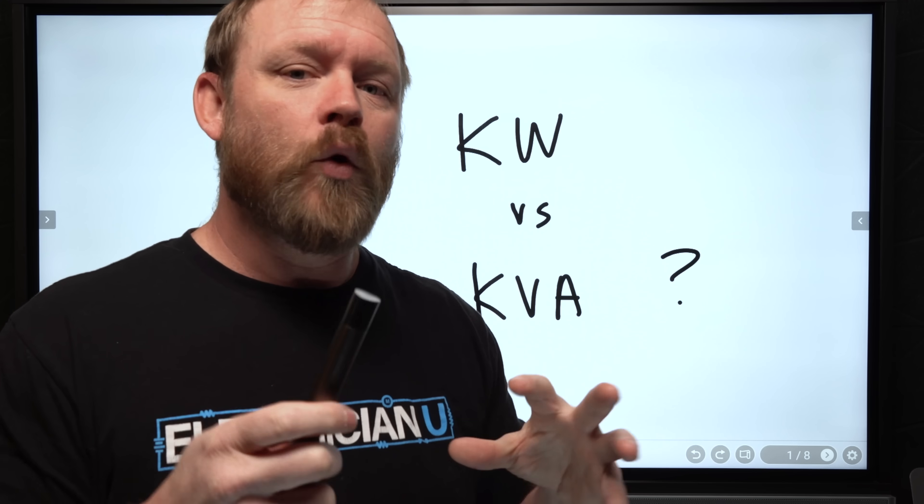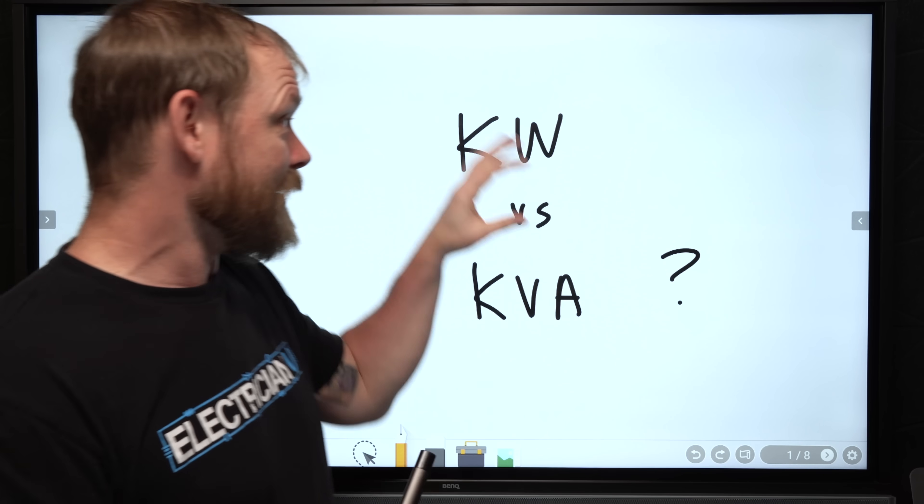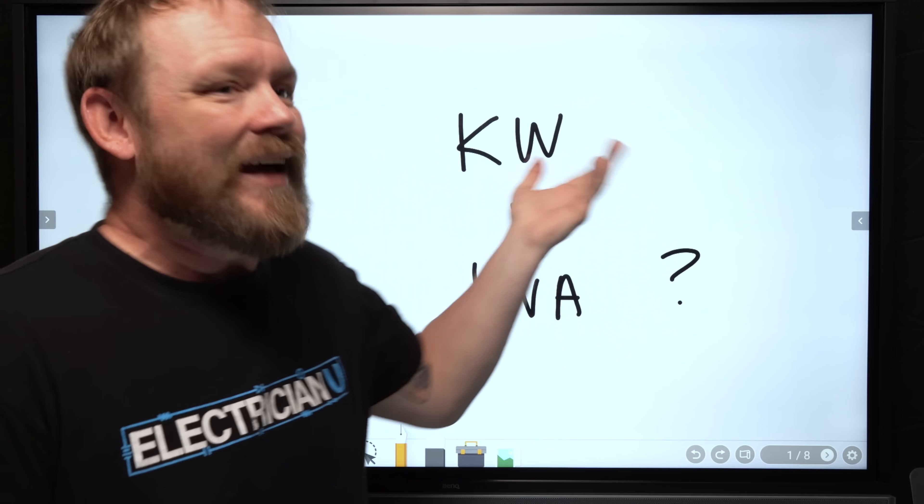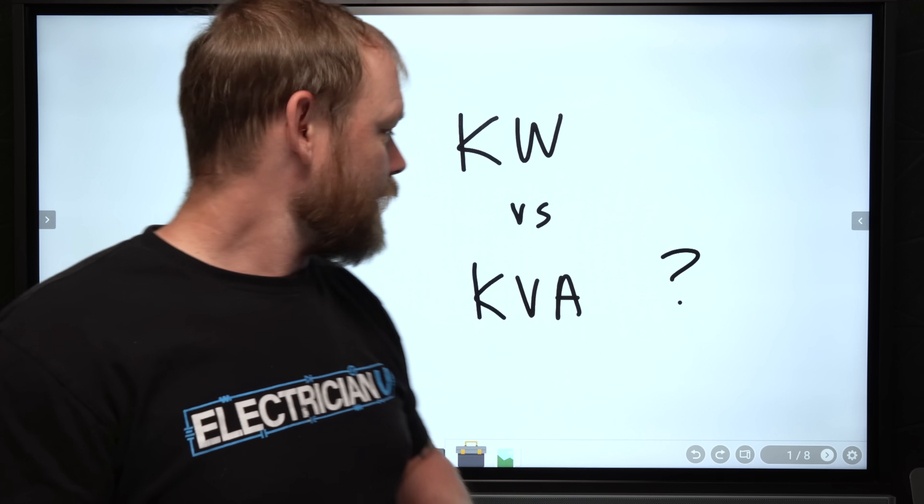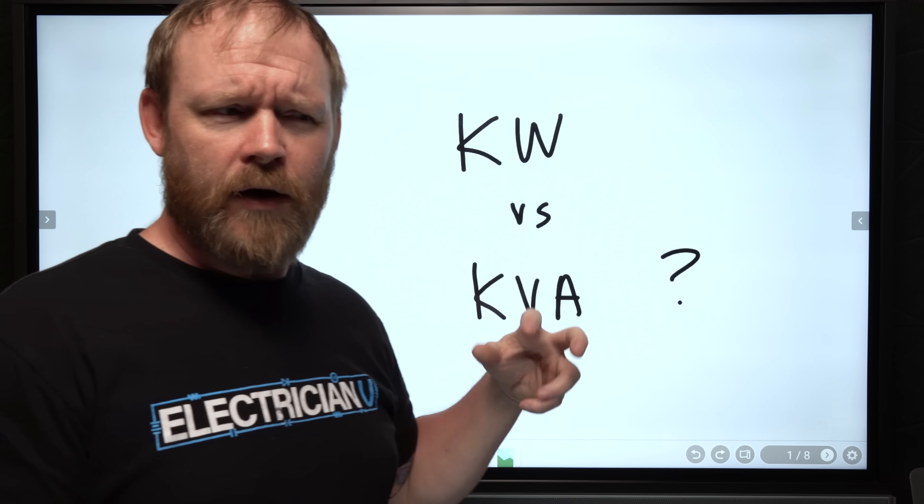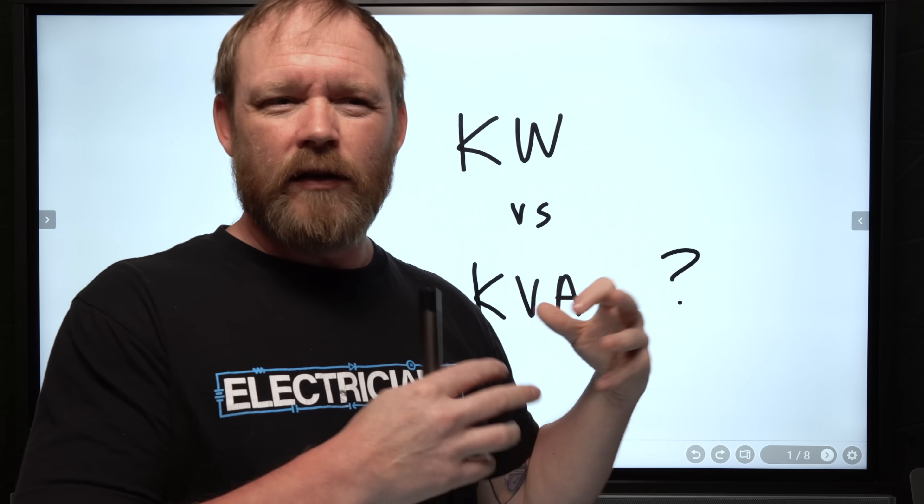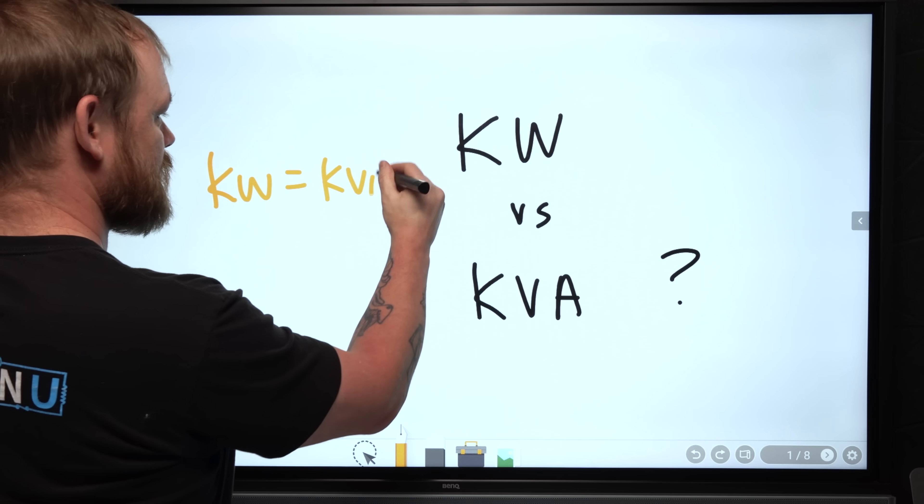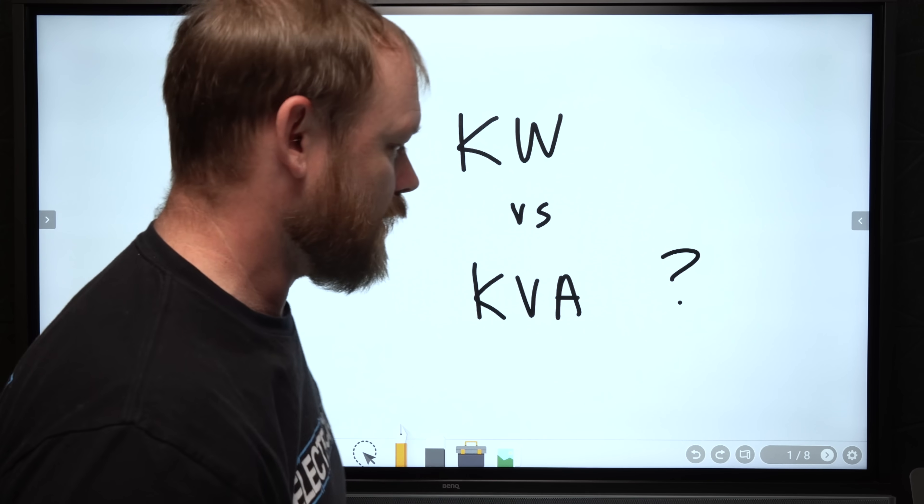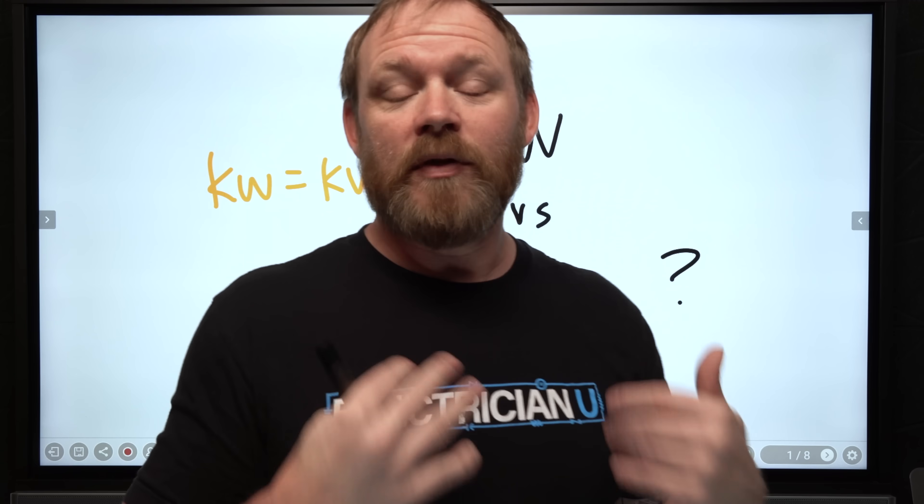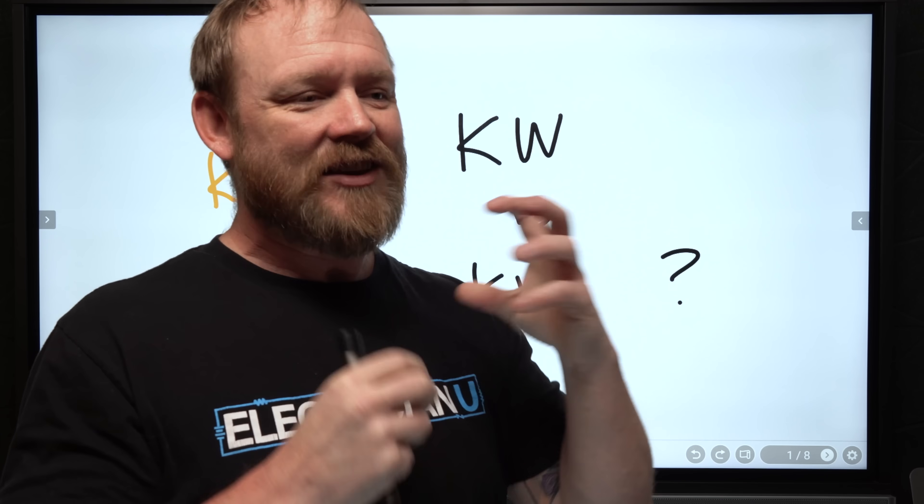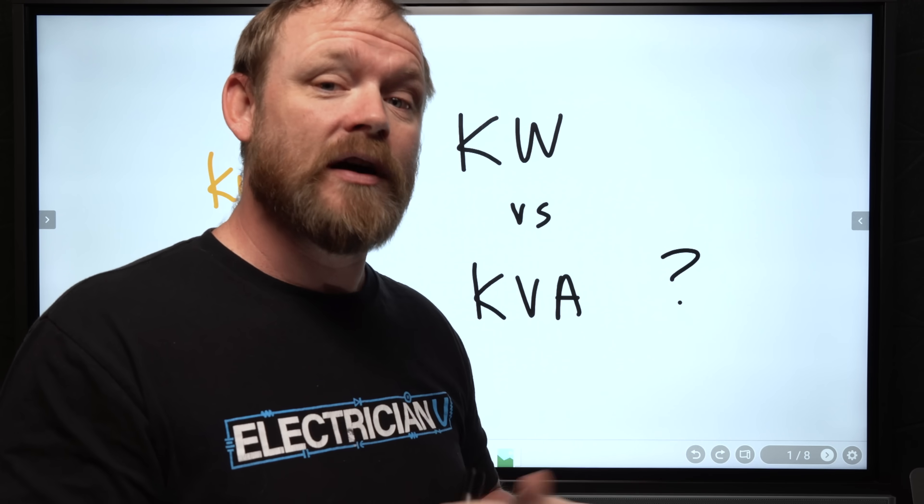Have you ever wondered why a lot of equipment in electrical is rated in KW and some other stuff is rated in KVA? If you look at light bulbs, they're rated in watts. If you look at transformers, they're rated in volt amps. A lot of people think KW equals KVA because of the power formula, but they're not the same thing. It's important to understand why not.